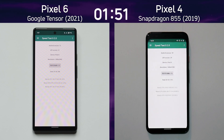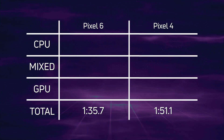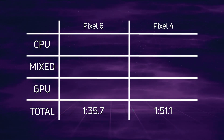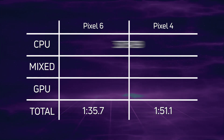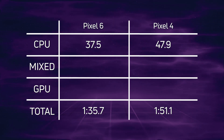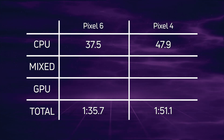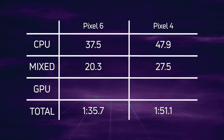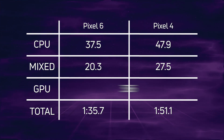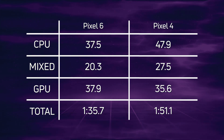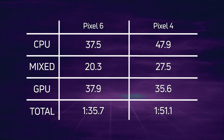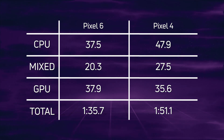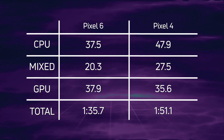Let's break down the scores and see exactly what happened. A convincing win by the Pixel 6 with the new Google Tensor processor: 1 minute 35.7, and then 15.4 seconds later came in the Pixel 4 with the Snapdragon 855 at 1 minute 51.1. On the CPU it was a very clear win for the Pixel 6: 37.5 versus 47.9 seconds — those Cortex-X1 cores doing their job nicely. In the mixed CPU-GPU test, a higher frame rate on the Pixel 6: 20.3 versus 27.5. However, on the GPU test we see a difference — 37.9 for the Pixel 6, but the Pixel 4 was actually faster at 35.6. The Adreno 640 in the Snapdragon 855 still punching above its weight, though it didn't make much difference to the overall score. The Pixel 6 was the overall winner at 1 minute 35.7.